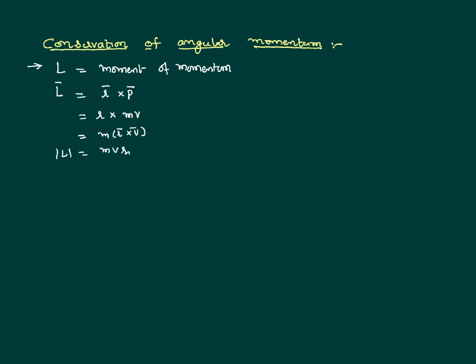We can further write that angular momentum L equals m·r²·ω, since v can be written as r·ω. At the broader level, m·r² is nothing but the moment of inertia of the body. So we can write angular momentum as the product of moment of inertia and angular velocity: L = Iω.